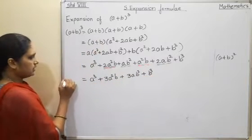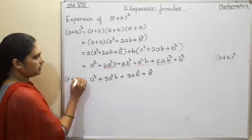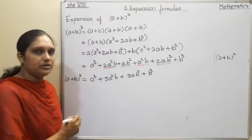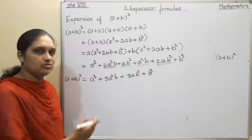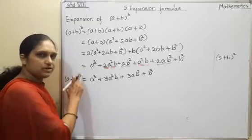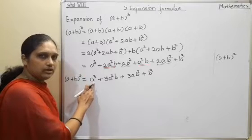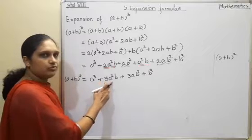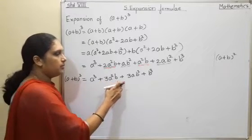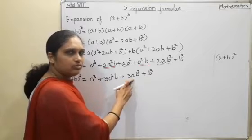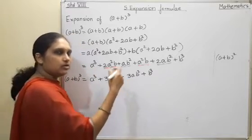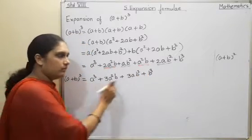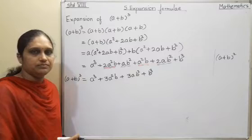So this is the expansion of (a+b) cube. Students, if you study it properly there is no need to memorize separately. See again: a plus b cube equals a cube, that is first number cube, plus 3 times first number squared times second number, plus 3 times first number times second number squared, plus second number cube. If you remember it this way, it will be easy. Thank you.